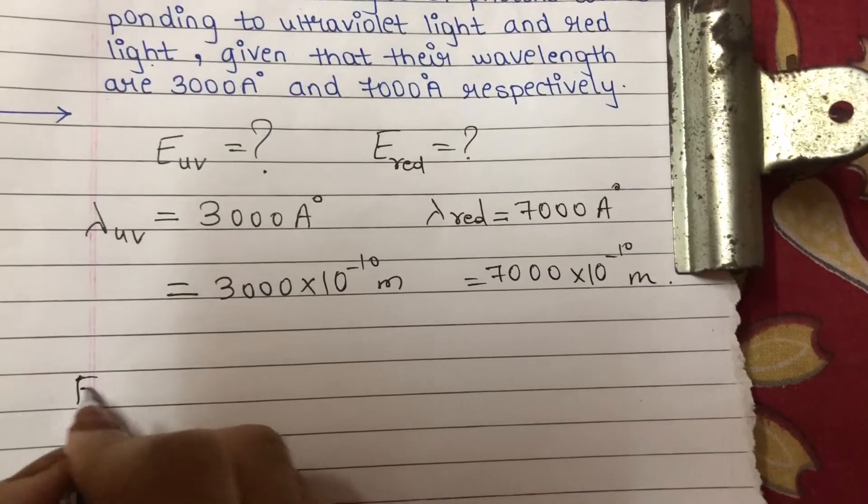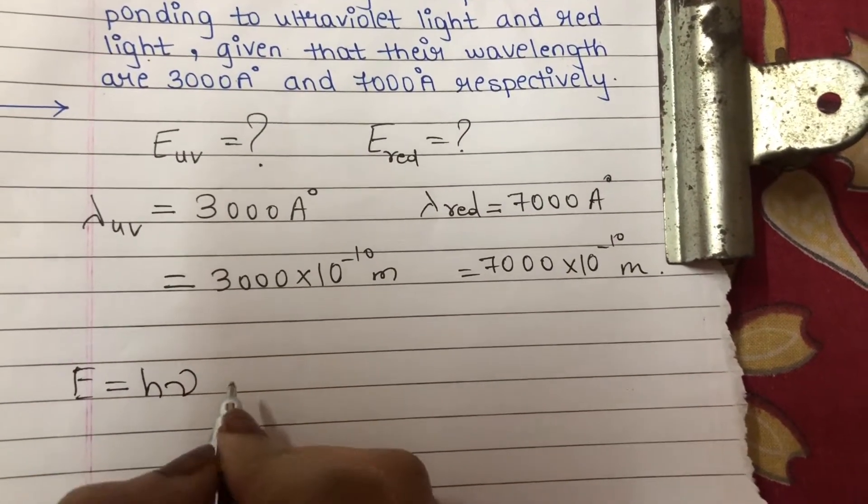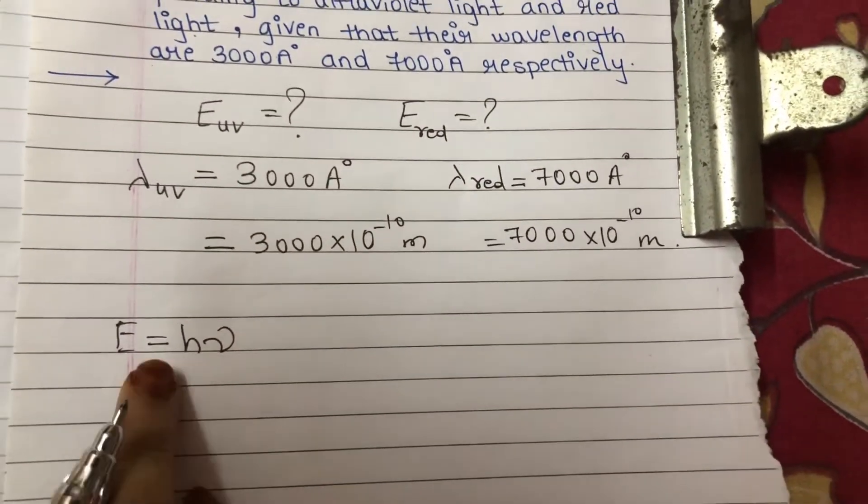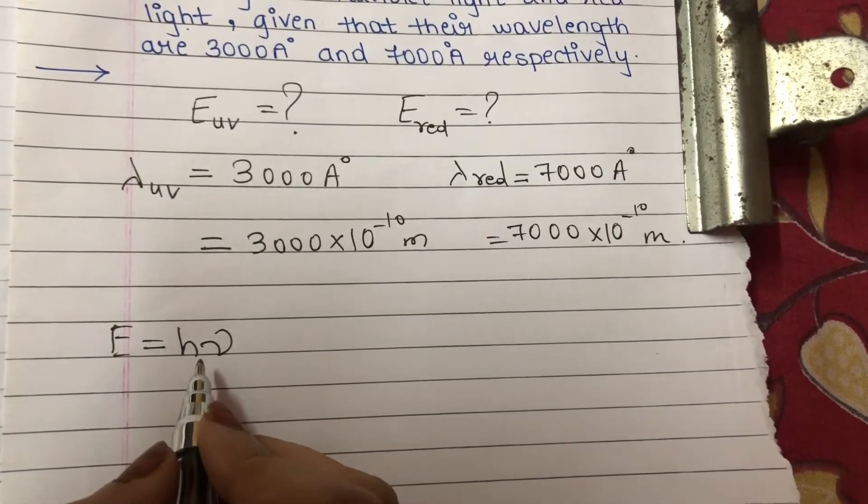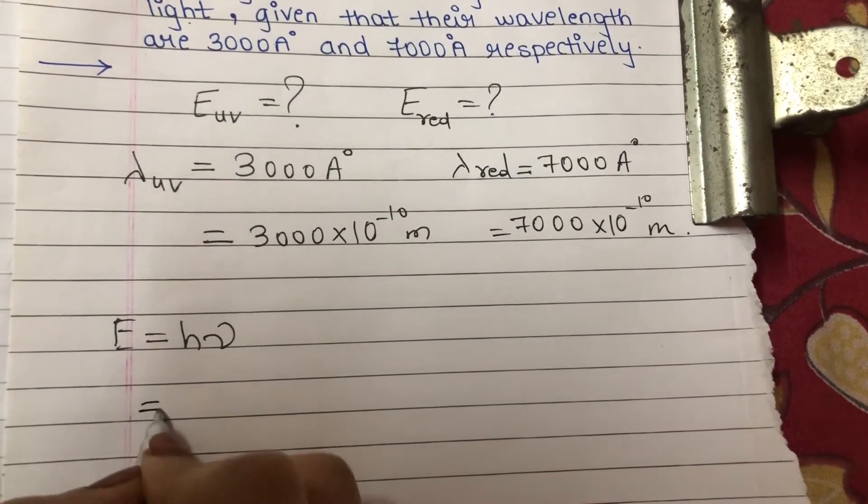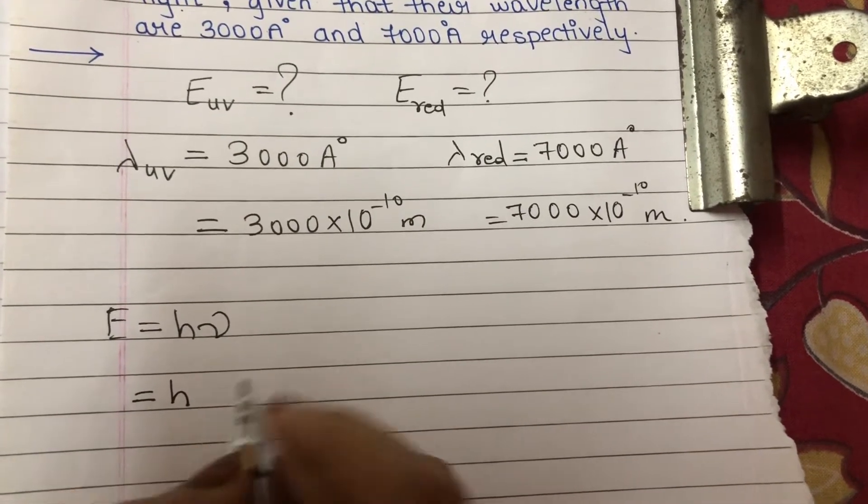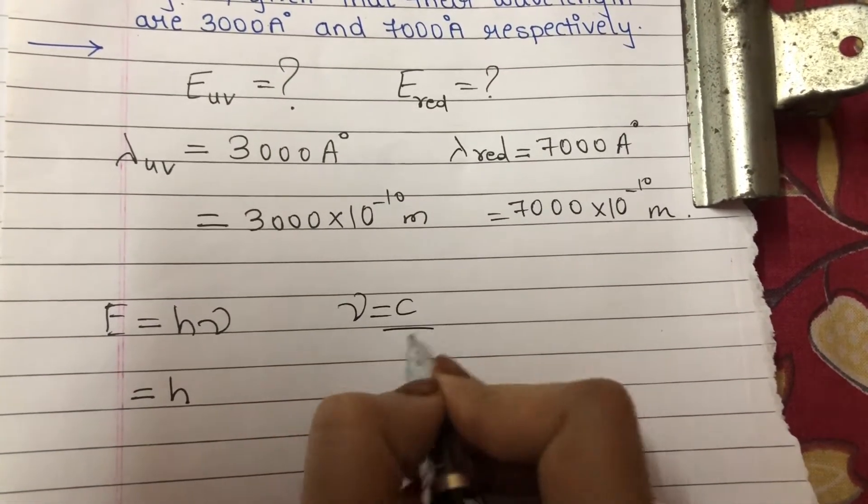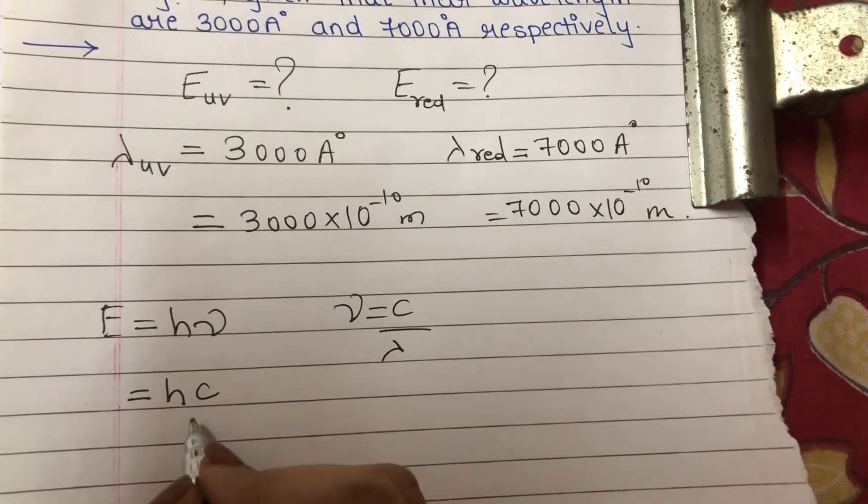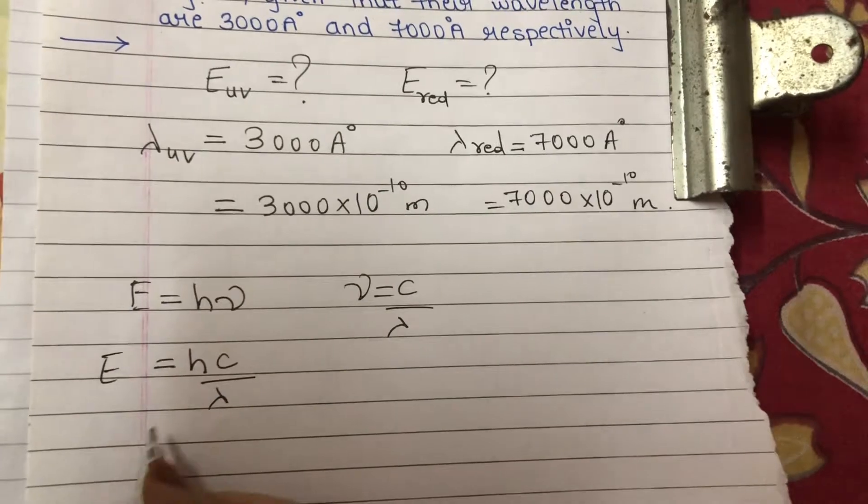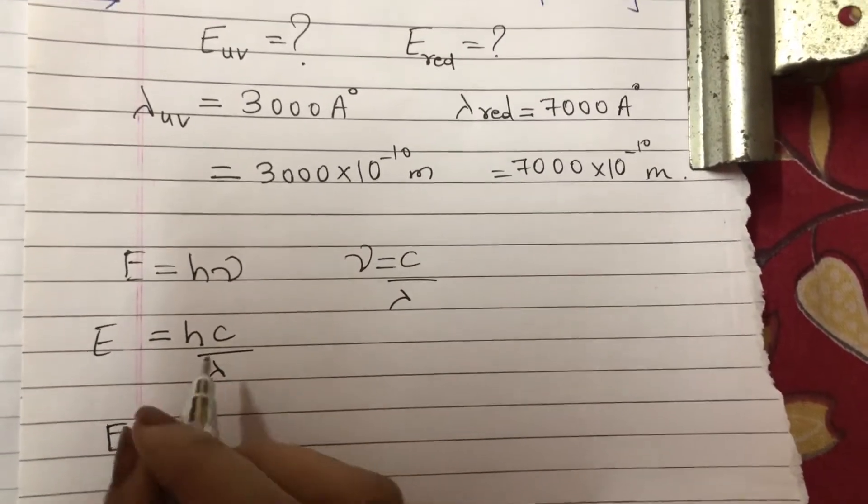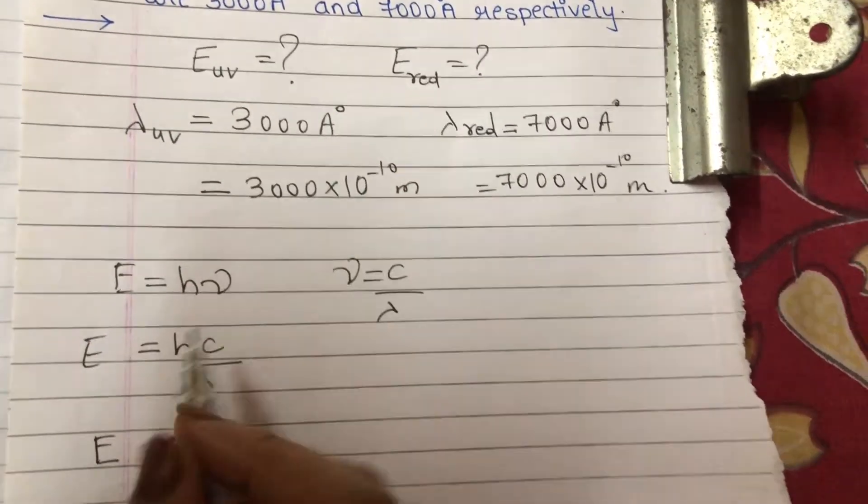The formula for energy is E = hν. Energy of photon is given by formula hν, where ν is frequency. So hν equals hc/λ. At place of ν we will write c/λ, where c is speed of light and λ is given to us. This is the general formula. We will be writing it for UV light and red light.